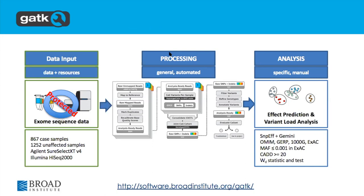We called variants per sample, then called variants across the cohorts — calling the case and control samples altogether in the joint calling. Then once we had that, we did the filtering, then the effect prediction, and variant load analysis as written by the original authors. Those are the workflows we wrote to actually generate the synthetic data. If we have time towards the end, or actually on Friday, we'll talk more about synthetic data generation — it'll be part of the mini hackathon.